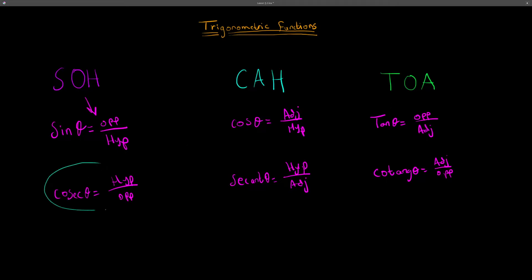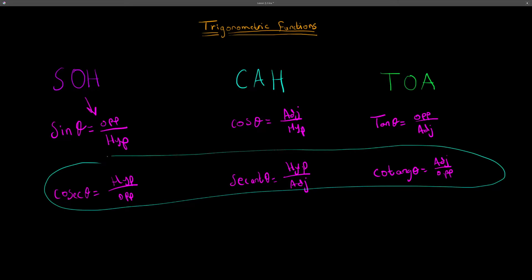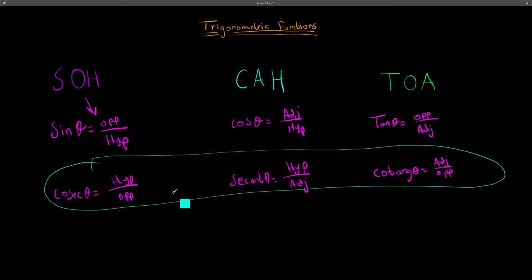These functions over here are the reciprocal functions. They're reciprocal functions, meaning it's the reciprocal of the fraction. So cosecant is hypotenuse over opposite. You can memorize SOH-CAH-TOA, and if you want the reciprocal, you just need to know that cosecant is the reciprocal of sine — and you basically know all six functions.